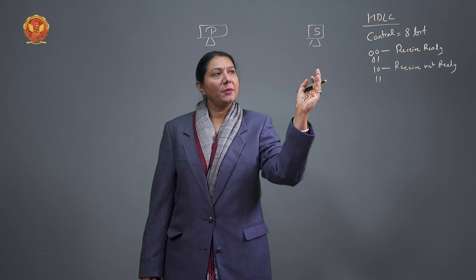In the Receive Ready frame, the first two bits are used as the supervisory bits, and the next two bits are set to 00 for RR. Then the P/F bit is used — P/F means Poll or Final. The Poll bit is set to 1 (P=1) in the RR frame sent by the primary to ask the secondary whether it has data.